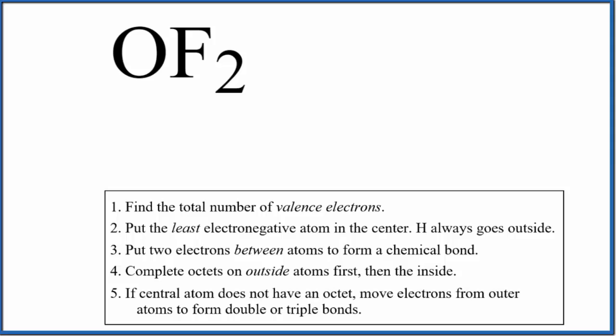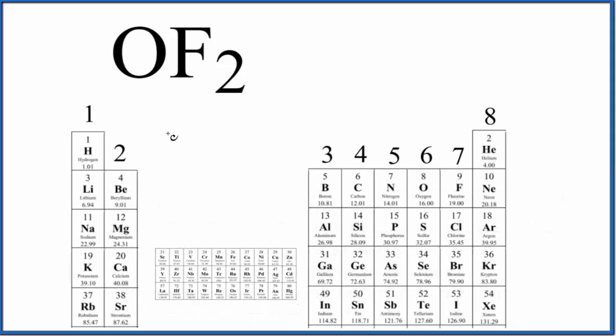The periodic table can help us do that. Oxygen is in group 16, sometimes called 6A, and has six valence electrons. Fluorine is in group 17, sometimes called 7A, with seven valence electrons. We have two fluorine atoms, so 6 plus 14 gives us a total of 20 valence electrons for the OF2 Lewis structure.